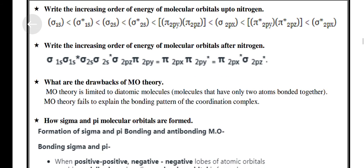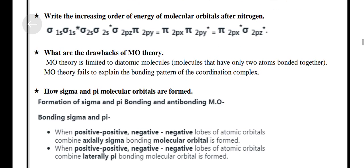Sixteenth question: Write the increasing order of energy of Molecular Orbitals — for nitrogen and after nitrogen. Also, what are the drawbacks of Molecular Orbital Theory?